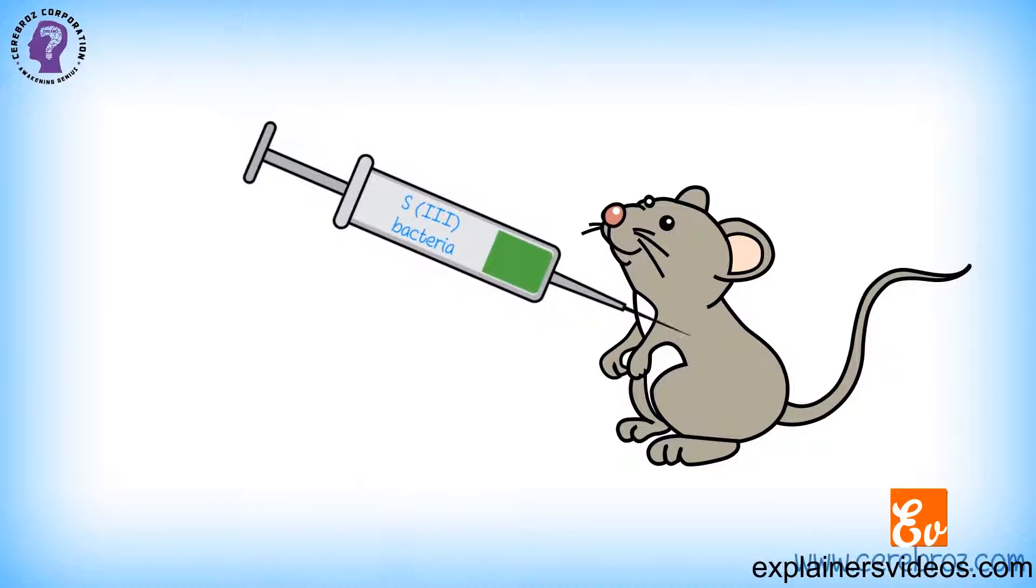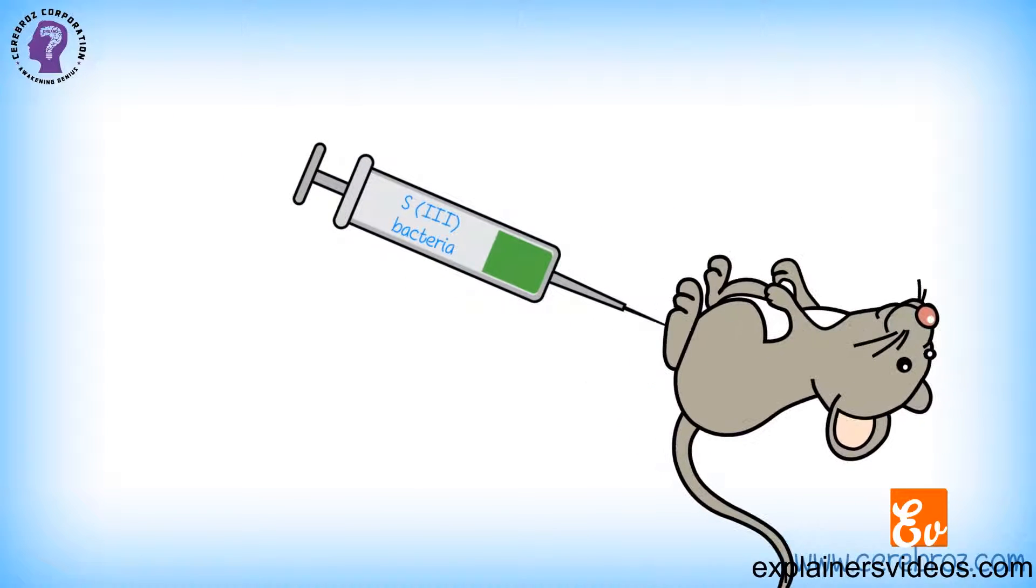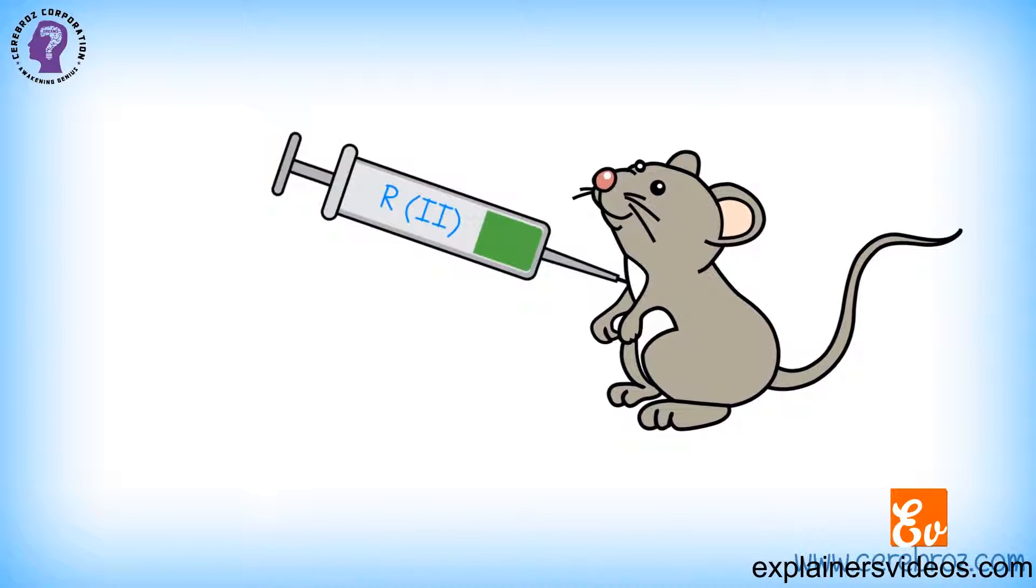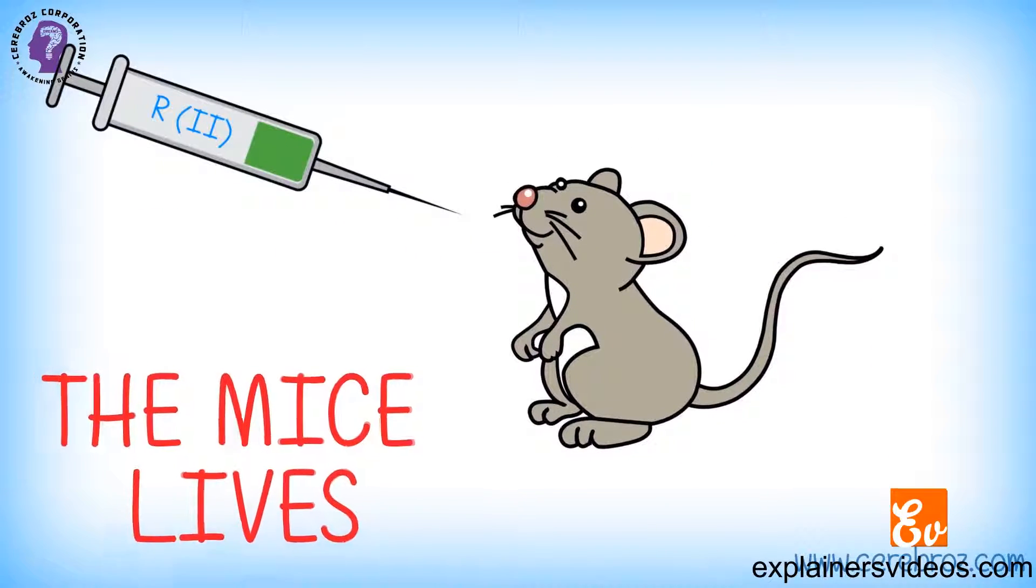When the virulent S3 bacteria were injected in mice, it killed them, causing pneumonia. But when the avirulent R2 was injected in mice, the mice lived.